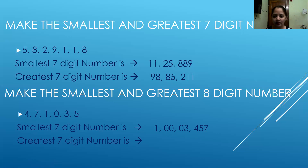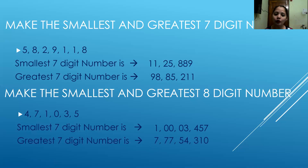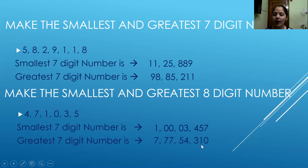Similarly, when forming the greatest eight digit number, I will repeat my greatest digit which is seven. I will write seven first, then repeat seven two more times to make it an eight digit number. The number framed is 7, 7, 7, 5, 4, 3, 1, 0. Keep in mind that the smallest digit is always repeated when framing the smallest number, and the greatest digit is repeated when framing the greatest number.